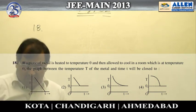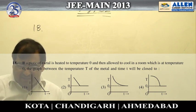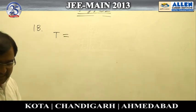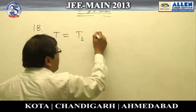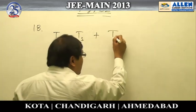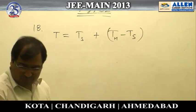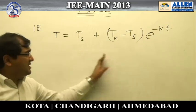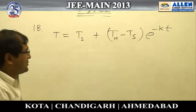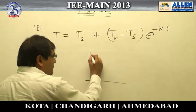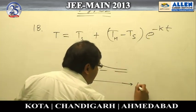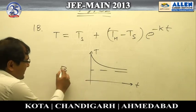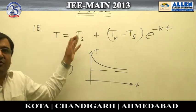Question number 18 is direct theory. Newton's law of cooling gives the formula for variation of temperature: T(t) = T_s + (T_h − T_s) · e^(−kt). This describes how the temperature of a body varies as it cools down. There is only one graph which satisfies this cooling equation, and that is option number 3.